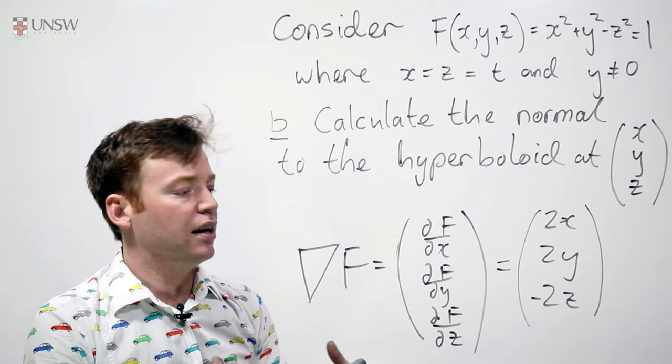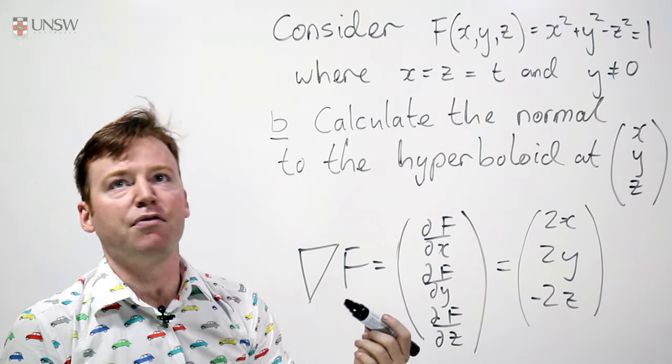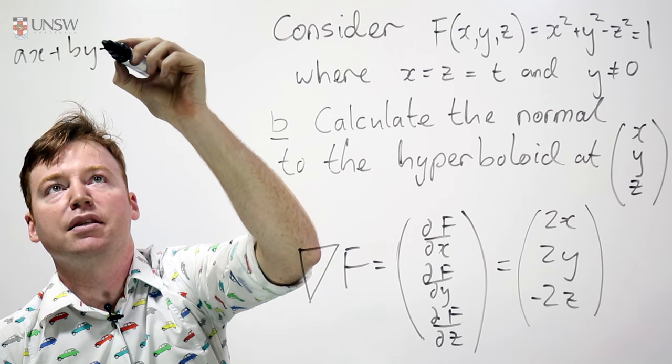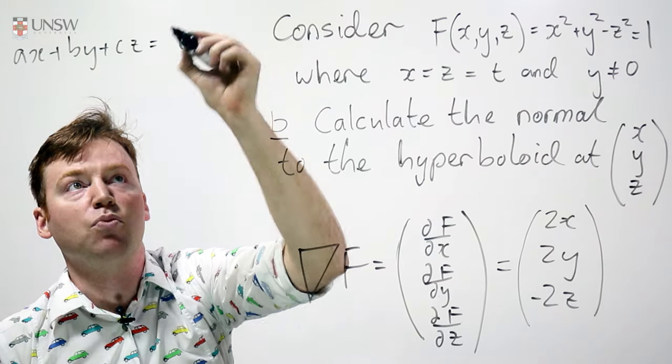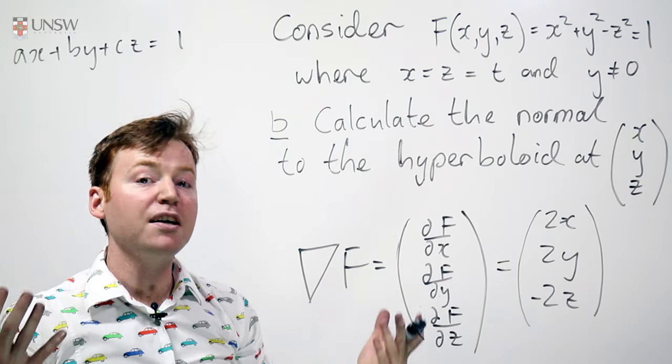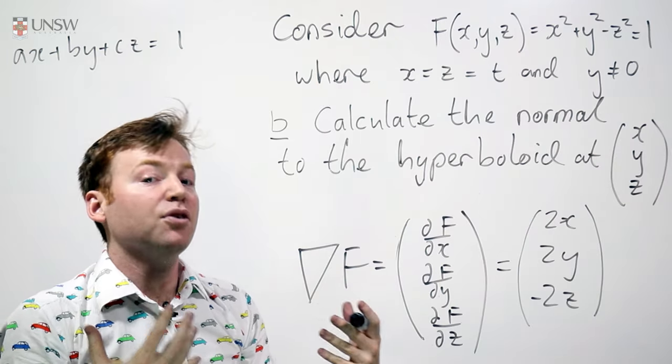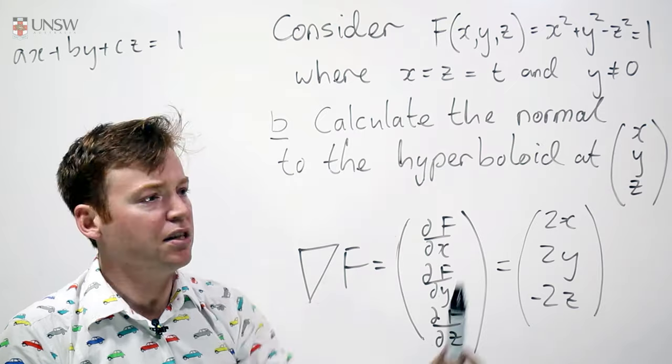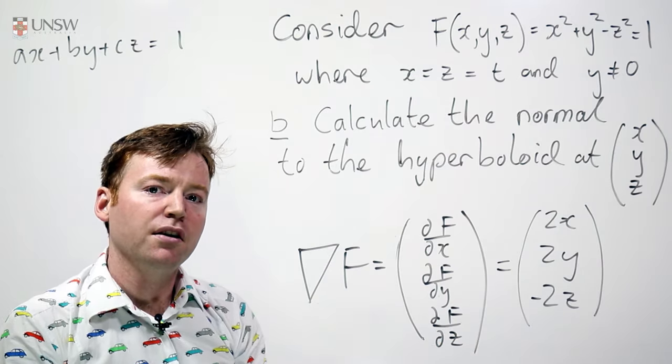If you recall, you can find the normal to a plane in this way, where if you have a plane which is of the form say ax plus by plus cz is equal to some constant, say 1, then the normal, you just read it off. It's the coefficients of a, b, c. That extends to not just planes but arbitrary functions, in this case the hyperboloid. It's just the normal is just the partial derivatives of that function.